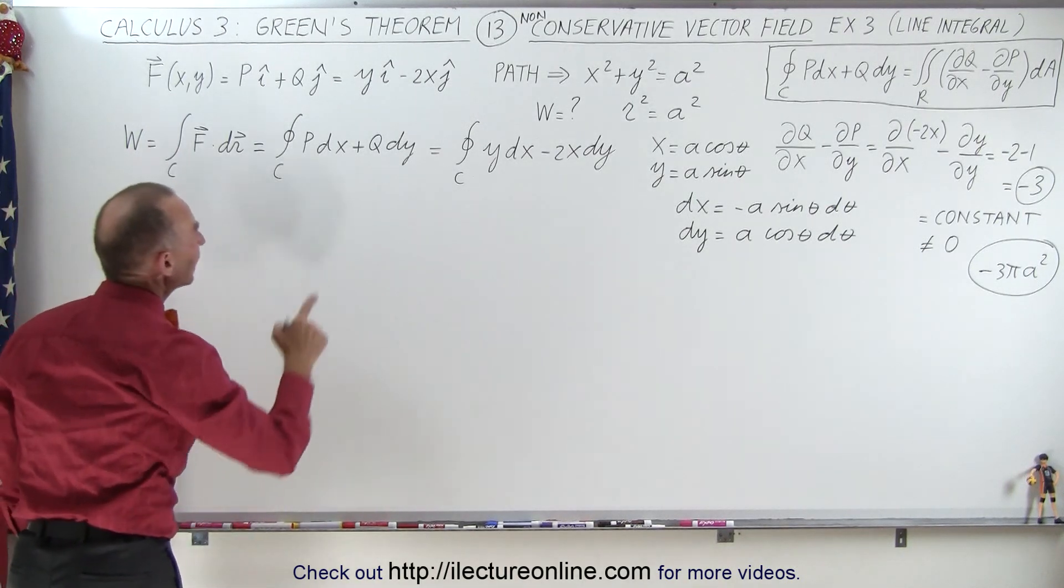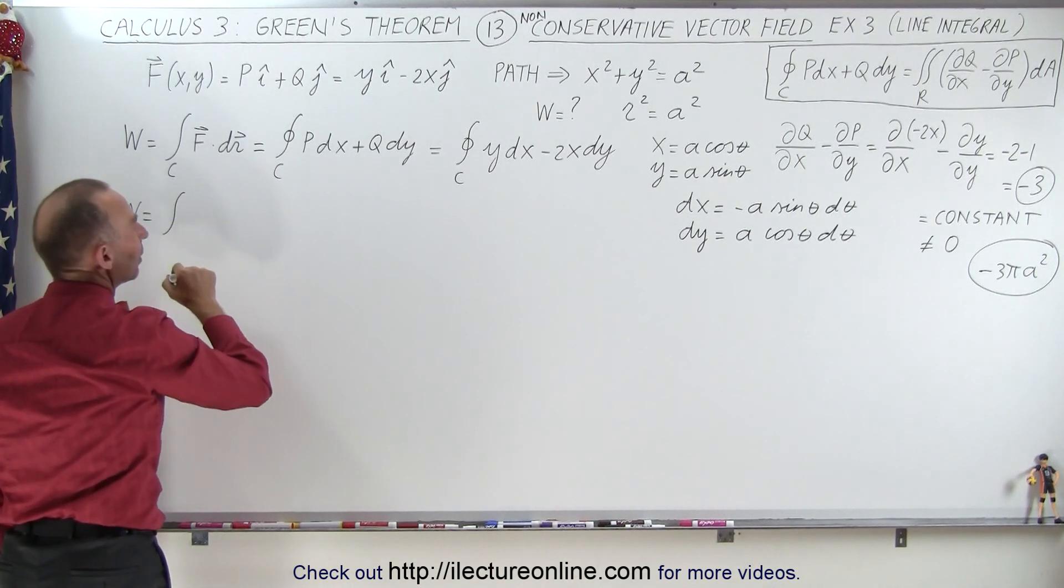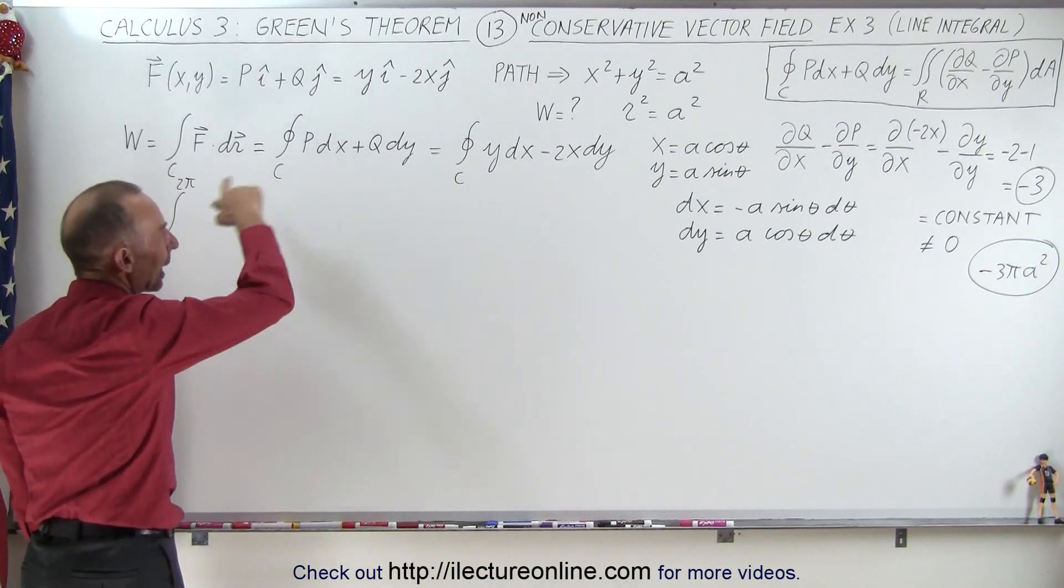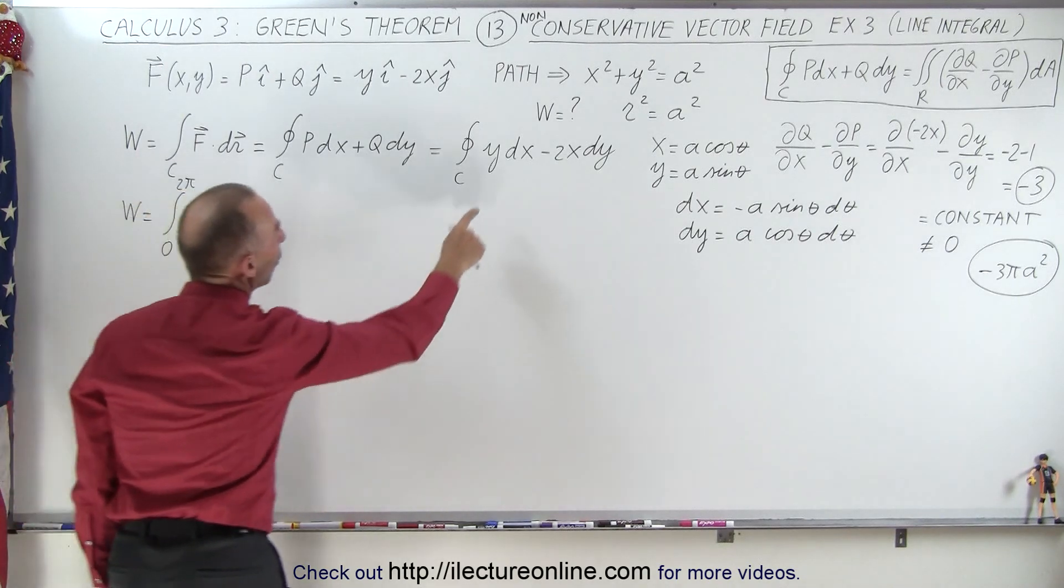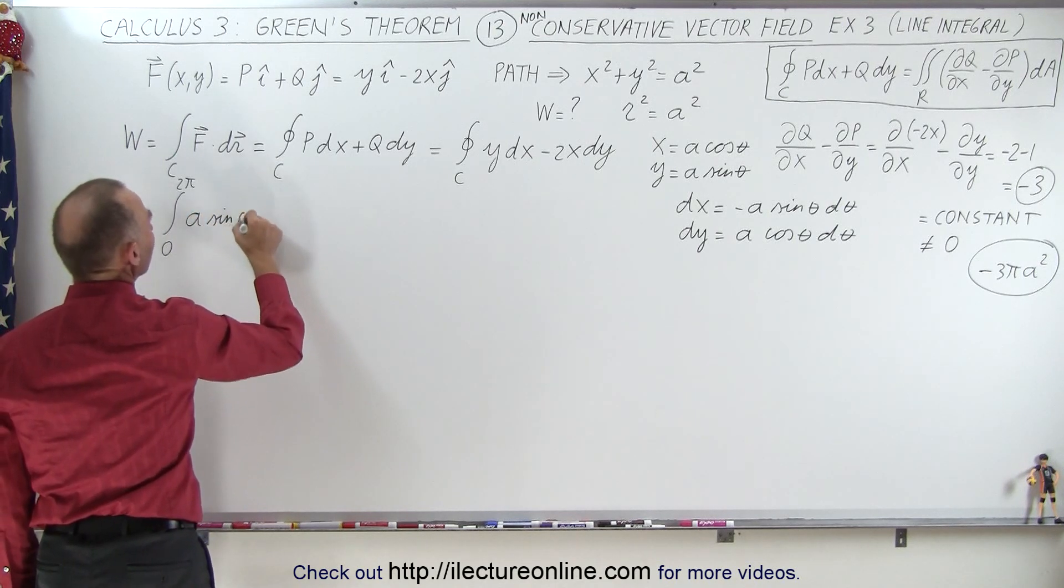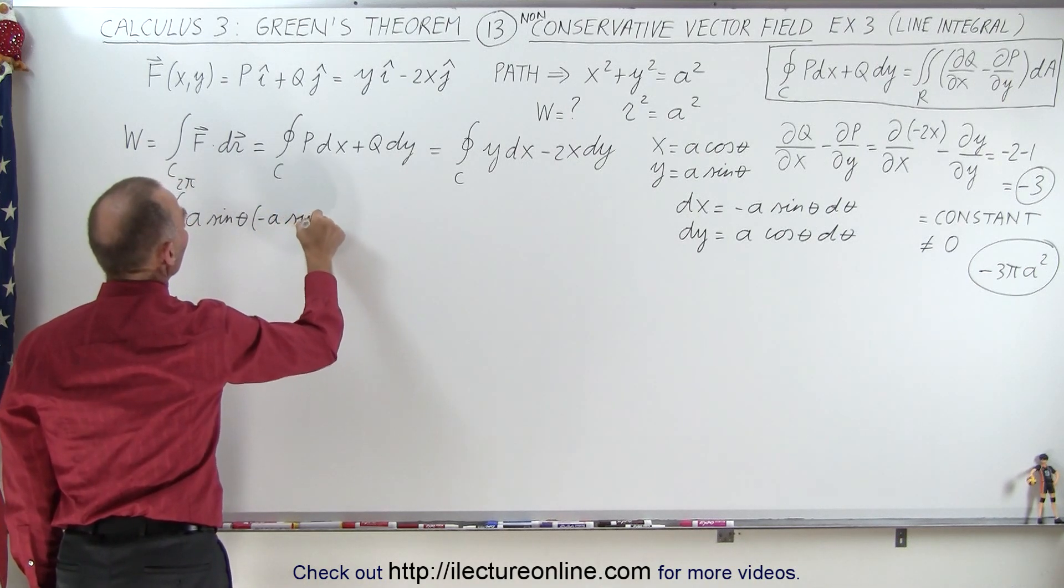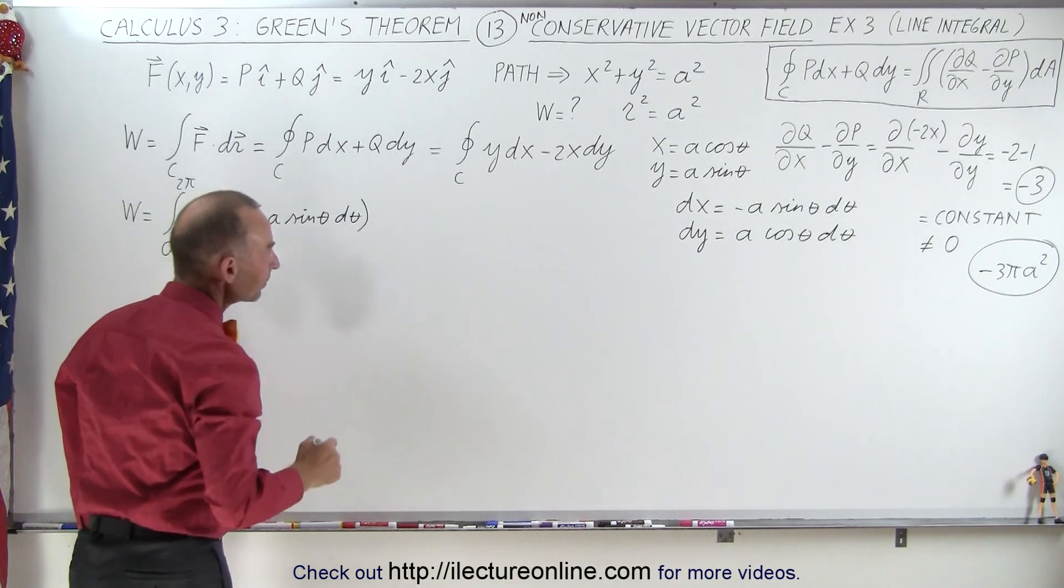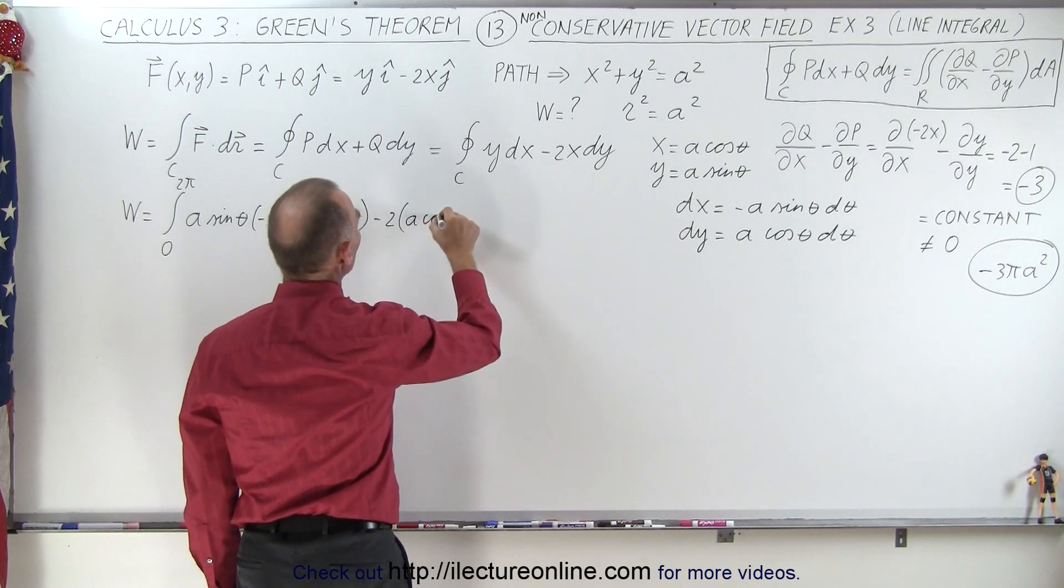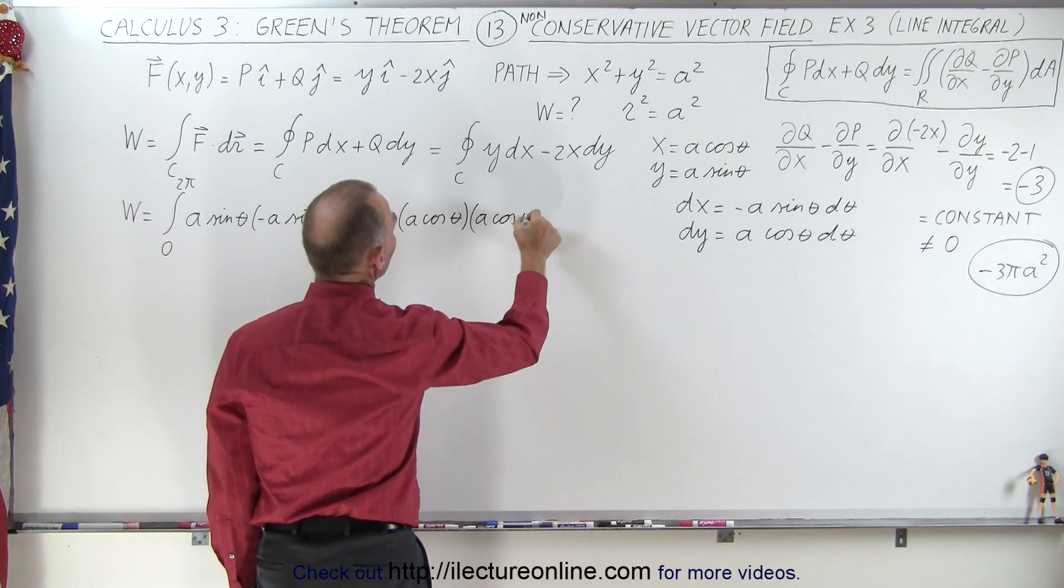So the work done is equal to the integral around a complete circle. So that's going to be equal to the integral from 0 to 2 pi because we're going to integrate all the way around 360 degrees. y dx can be written as a times the sine of theta and dx can be written as minus a times the sine of theta d theta minus 2 times x which is a times the cosine of theta times dy which is a times the cosine of theta d theta.